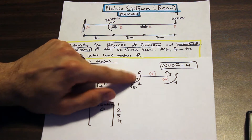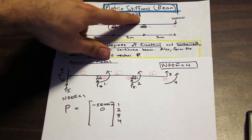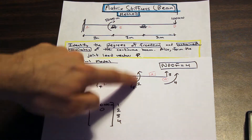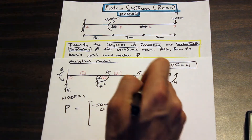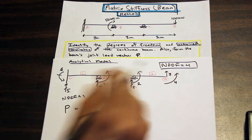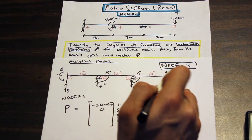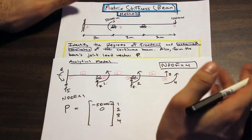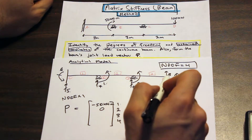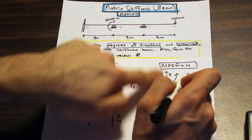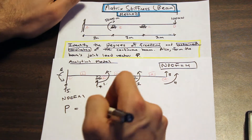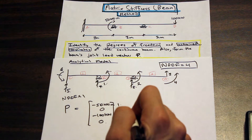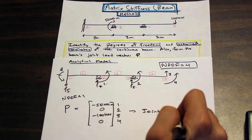For example, even if there is a vertical force at that joint, it would still be zero here, because it needs to correspond to the degree of freedom type — if it were a vertical force, it would correspond to a reaction number, not a degree of freedom. Moving to degree of freedom three: we do have a force of 100 kilonewtons at point D (joint four). It is opposite to our sign convention in the analytical model, so it goes in as negative 100 kilonewtons. There is no external rotation at that end, so the fourth entry is zero. That's our joint load vector.